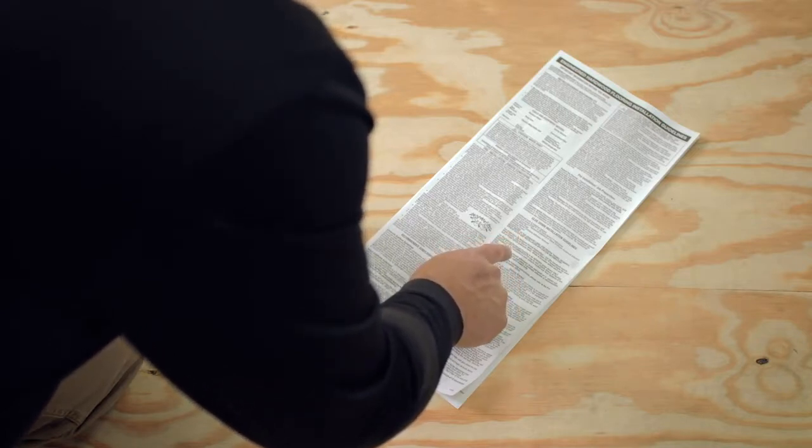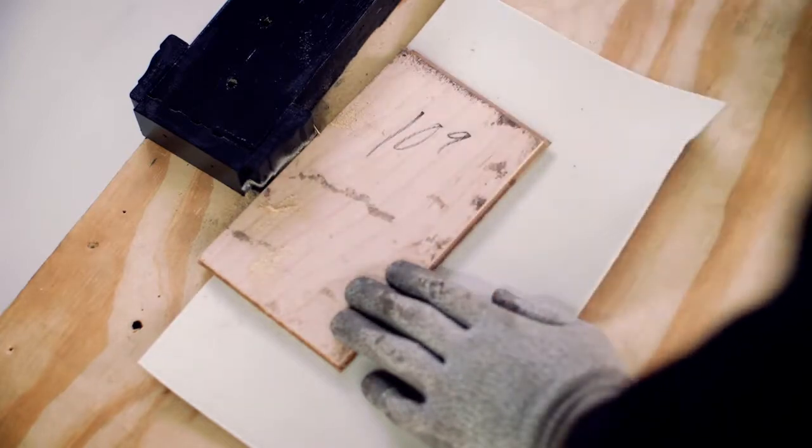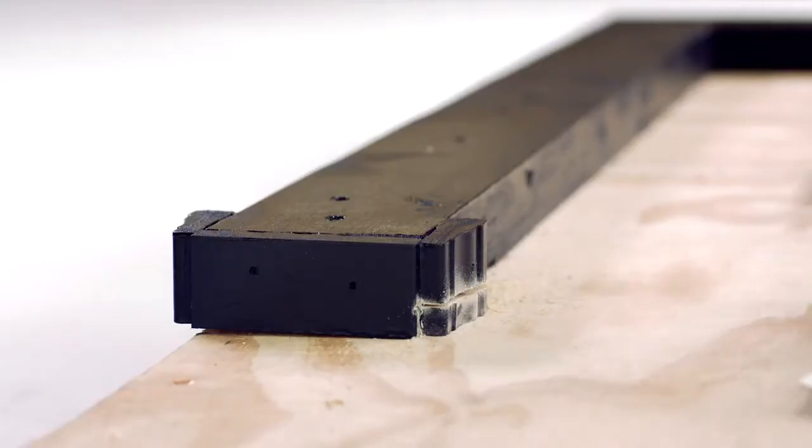And be sure to check the written instructions for more details about installation over existing floors. You will need to remove quarter round and undercut door frames to provide necessary clearance for your new engineered hardwood flooring.